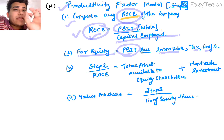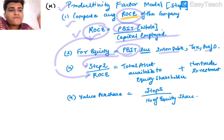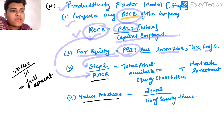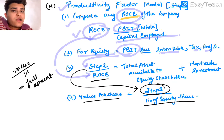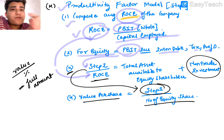Step two continued: divide the equity shareholders' profit by the percentage rate to get the full value — same concept as value divided by percentage. Step three: divide by number of equity shares to get value per share. Don't forget to add non-traded investment in step three, because non-traded investment is held aside and belongs to equity shareholders.